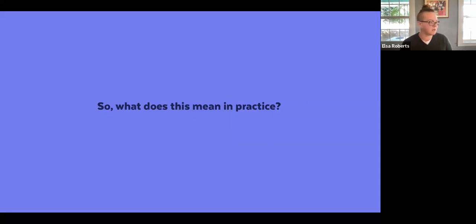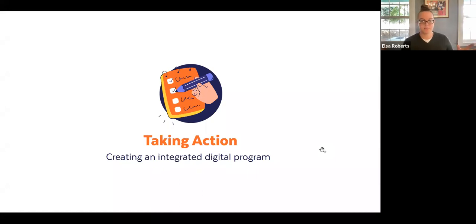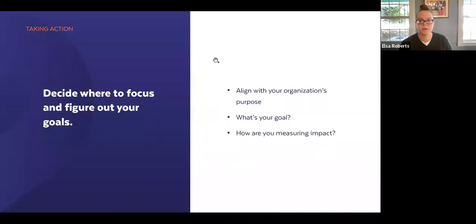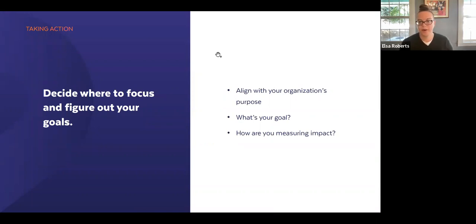So what does it mean in practice? This workshop is really about taking action — how you can actually create an integrated digital program. First, you want to decide where your focus is and figure out what your goals are. This is about backing up and creating a plan before you start to take action. You want to make sure you're aligned with your organization's purpose, establish a goal, and then figure out how you're measuring impact and demonstrating that it's worth the investment.